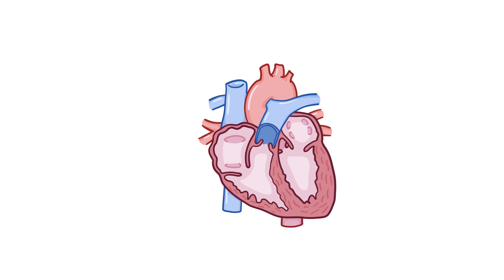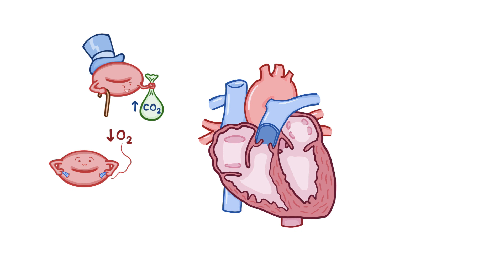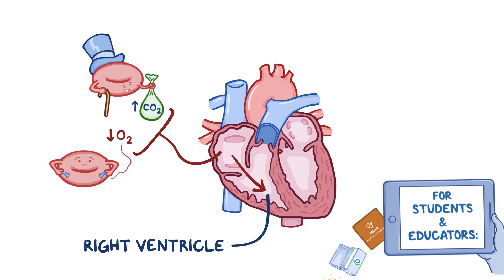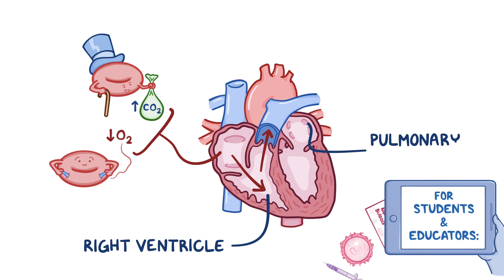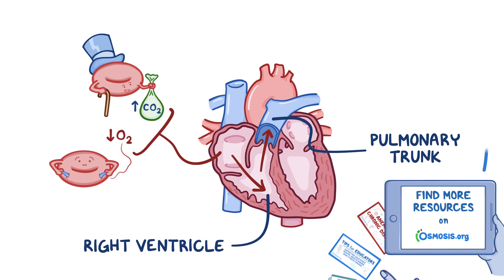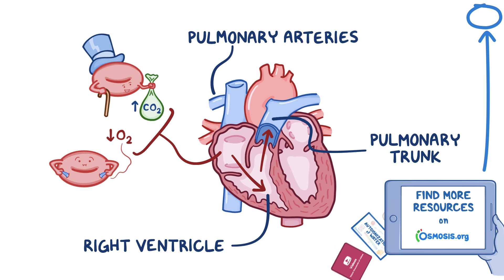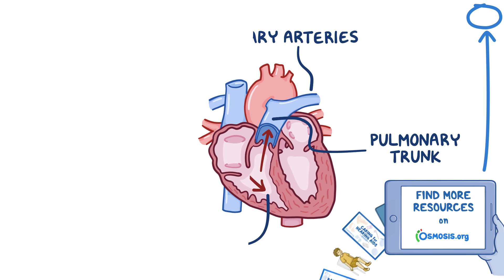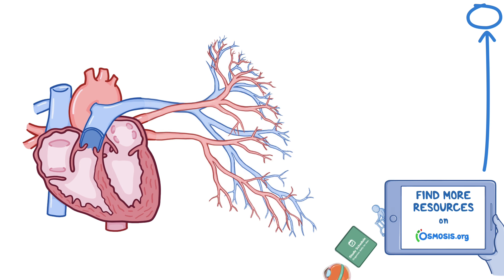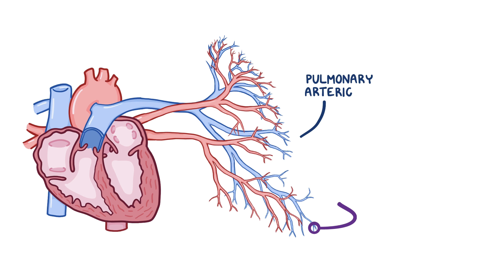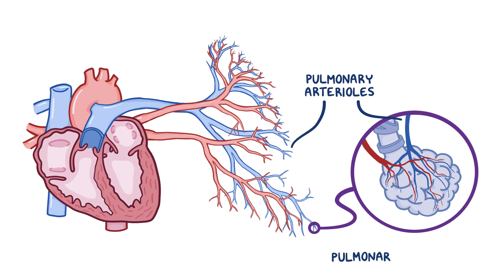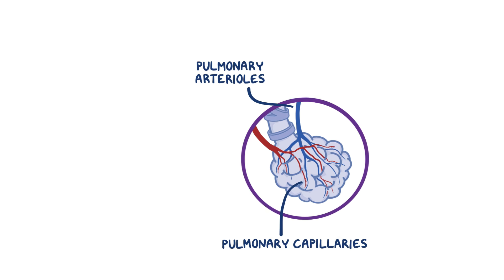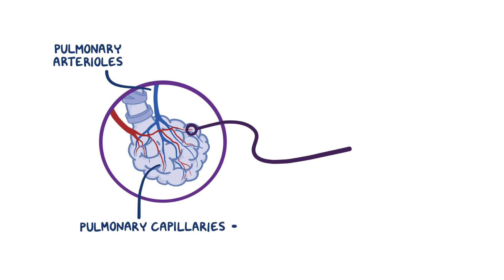Pulmonary circulation starts with oxygen-poor and carbon dioxide-rich blood in the right atrium that flows into the right ventricle. From there, blood is pumped into the large pulmonary trunk, which splits to form the two pulmonary arteries, one for each lung. The pulmonary arteries divide into smaller arteries known as pulmonary arterioles and then eventually into pulmonary capillaries which surround the alveoli, which are the millions of tiny air sacs where gas exchange happens.